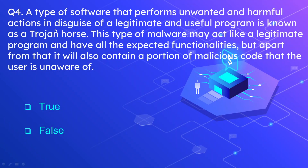Question number 4: A type of software that performs unwanted and harmful actions in the disguise of a legitimate and useful program is known as a trojan horse. This type of malware may act like a legitimate program and have all the expected functionalities, but it will also contain a portion of malicious code that the user is unaware of. This statement is true.